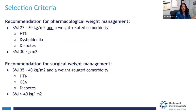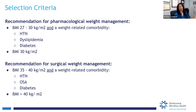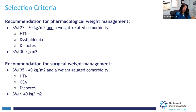This slide summarizes: a BMI of 27 with a weight-related comorbidity such as high blood pressure or diabetes requires medicines; a BMI over 30 does not require a comorbidity; and surgical weight loss is for those with a BMI over 35 with a comorbidity, or over 40 without comorbidities.